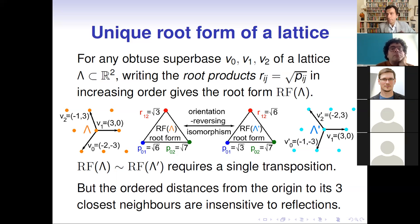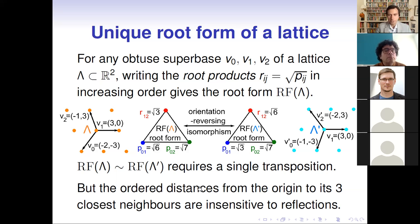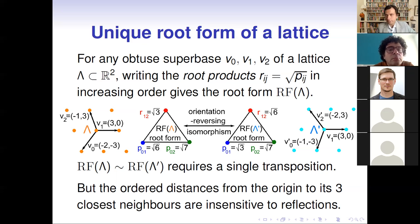The final invariant uniquely representing a two-dimensional lattice is a triple of numbers written in increasing order if we allow all isometries. If we allow only orientation-preserving isometries, we start from the minimum number but the two other numbers can be swapped or not depending on orientation. Note that this ordering distinguishes lattices that differ by reflection. In two dimensions, the root products of vo-norms give distances from the origin to the three closest neighbors, and these three distances also form an invariant but are insensitive to reflections.